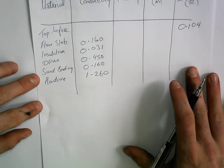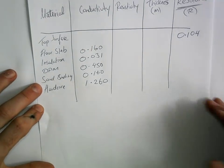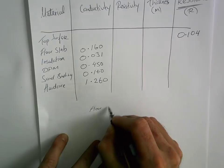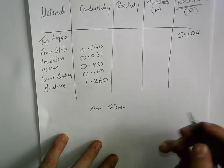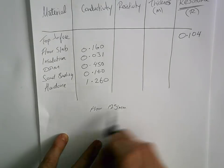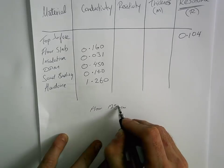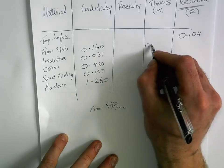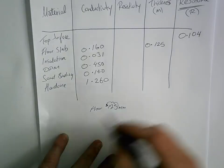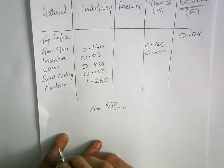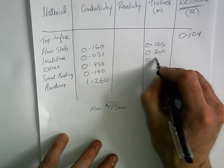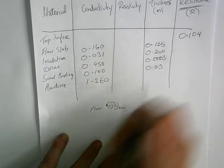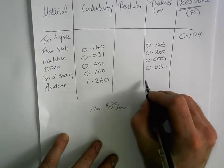Thicknesses are given in millimeters, which can cause problems when translating to meters. The simple way: you need three decimal places. For example, the floor slab is 125mm — move the decimal point three places to the left, giving 0.125m. The insulation is 0.200m, the DPM is 0.0003m, the sand binding is 0.030m, and the hardcore is 0.225m.